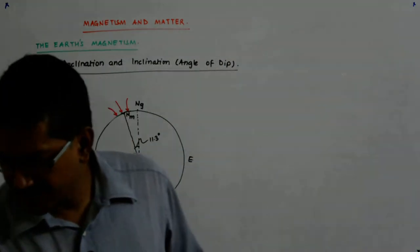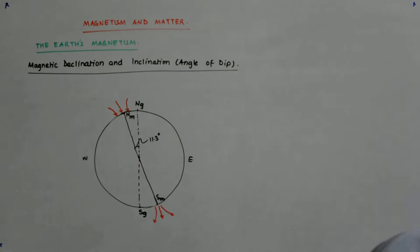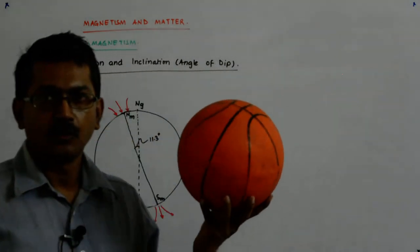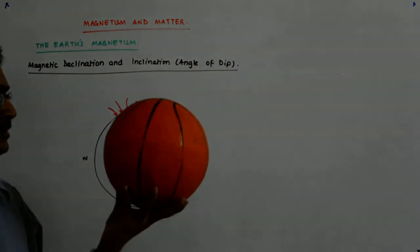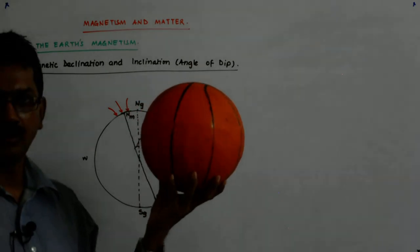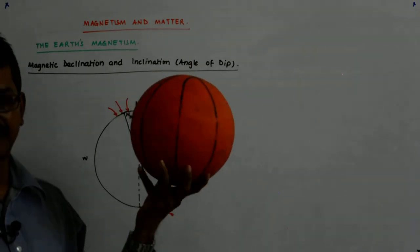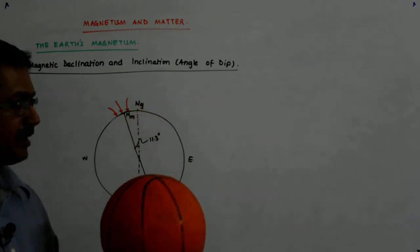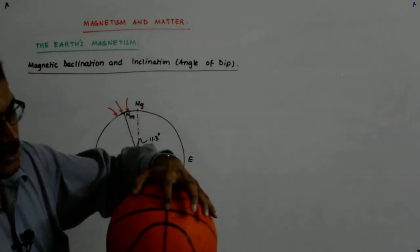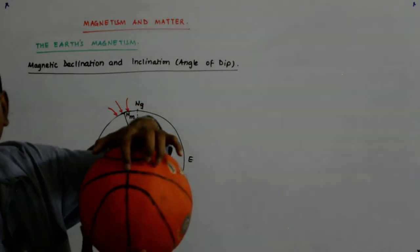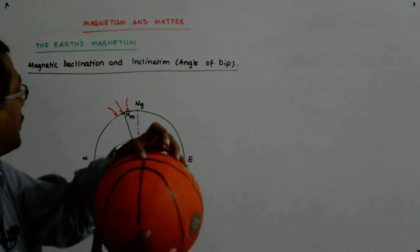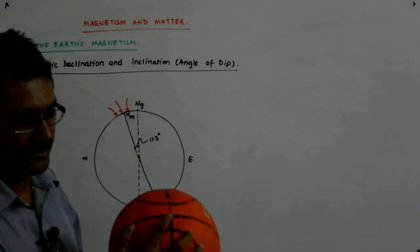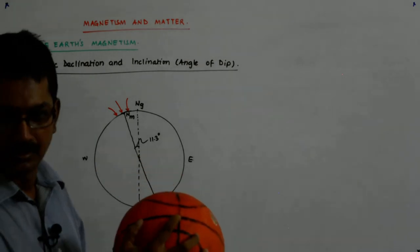To understand this, let us use this ball — this is a basketball. I'll say that this represents the earth. This tip of the ball I consider to be my geographical north. Do we understand geographical north?